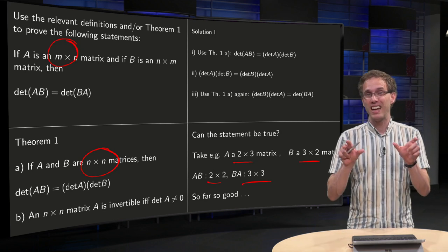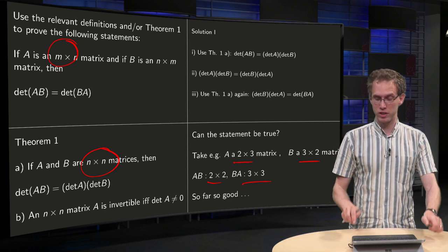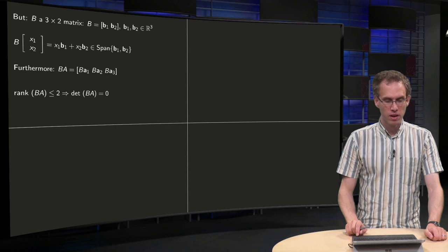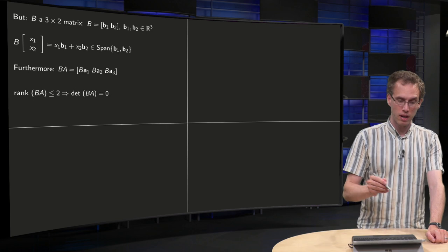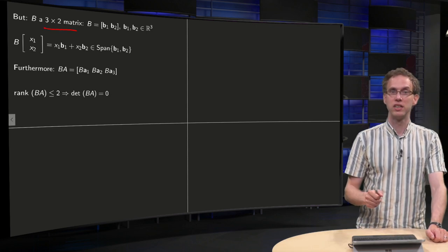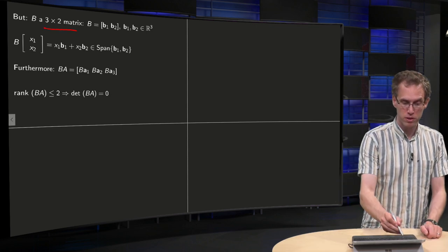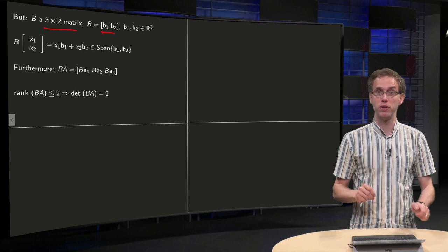But are they equal, or are they always equal? Well, let's take a closer look into this problem. A may be a 3 by 2 matrix. So B has two columns, B consisting of columns B1 and B2,